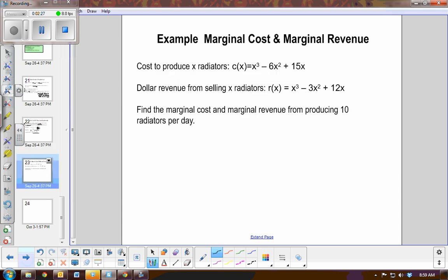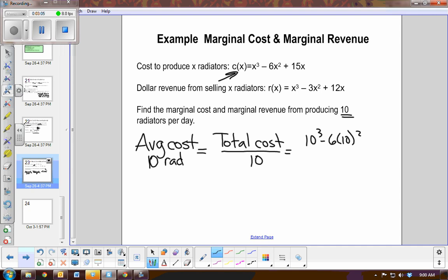Let's do an example. Let's say I'm producing radiators. This is the function that represents the cost of producing radiators. We're going to be looking at 10 radiators. But first, what is the average cost of producing 10 radiators? I would find the total cost divided by 10. So we would substitute the value 10 into the function. So we would have 10³ - 6(10²) + 15(10), all divided by 10.